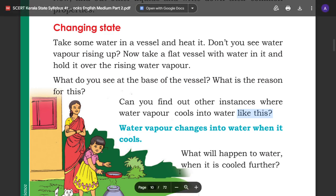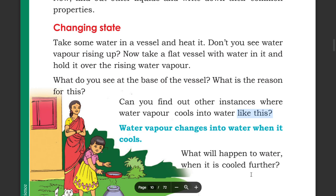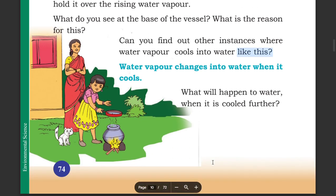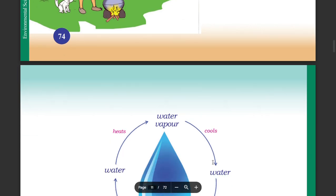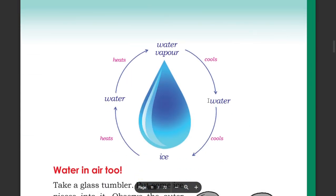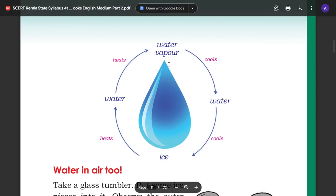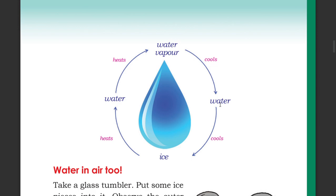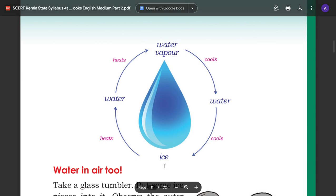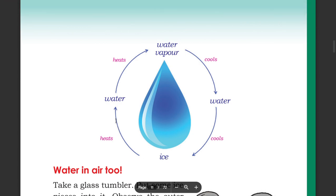What will happen to water when it is cooled further? Water vapour is used to form water. Water can be turned into ice if cooled further, such as in a freezer.